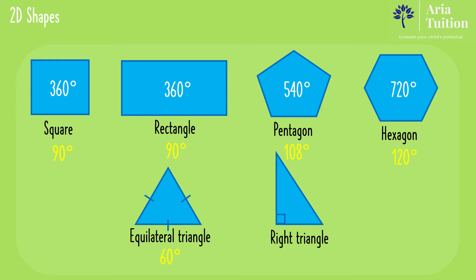A triangle's angles add up to 180 degrees. It seems like the greater the number of sides, the greater the total number of angles.